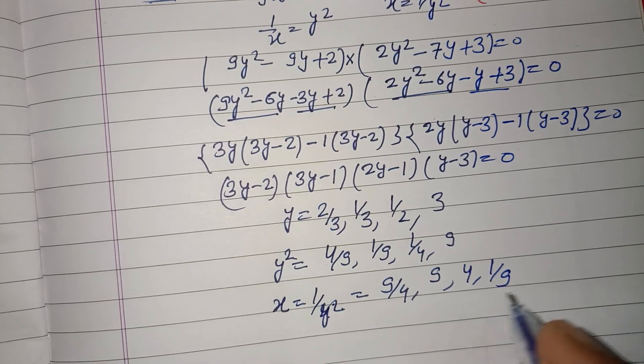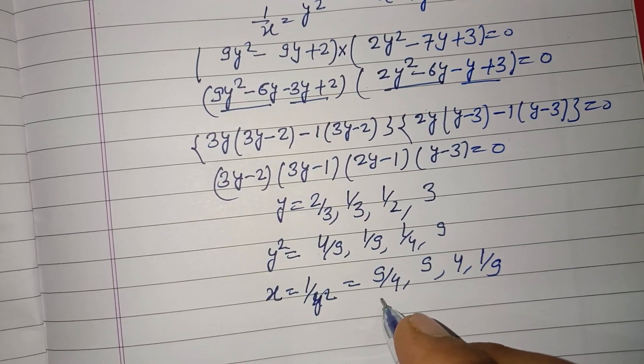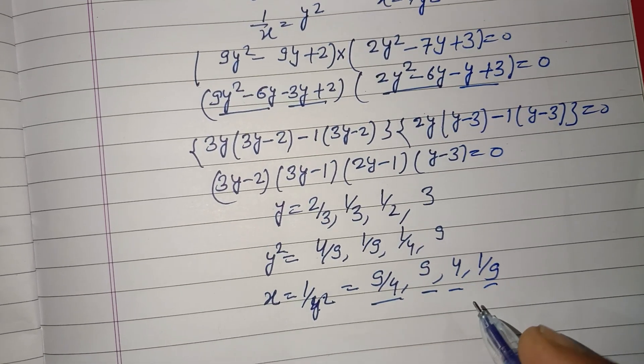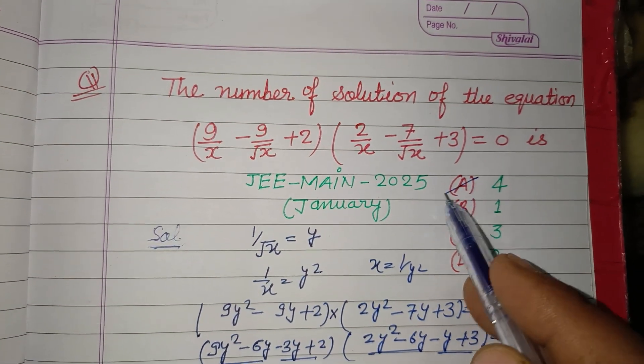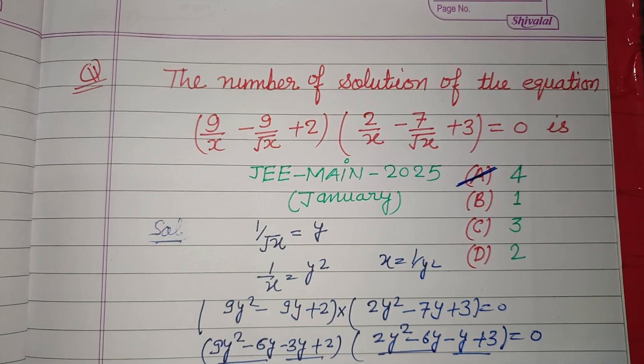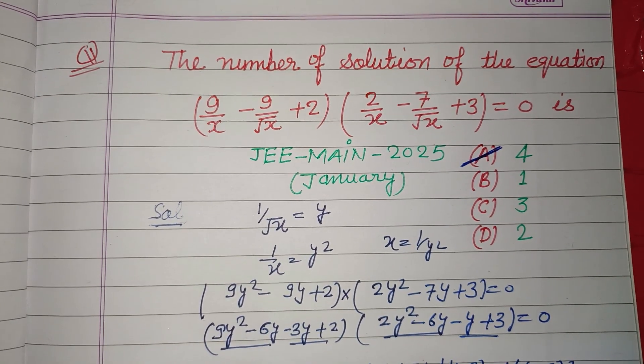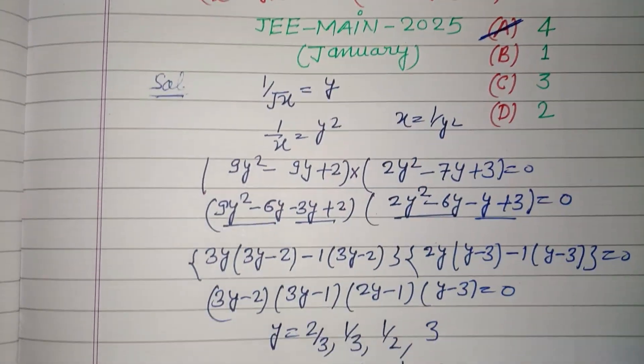These are the values of x which are 4 in number. Therefore the equation has 4 solutions. So A is the correct answer of this question. I hope you got it. Please like the video, subscribe the channel, thanks for watching.